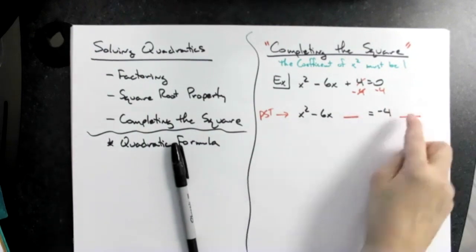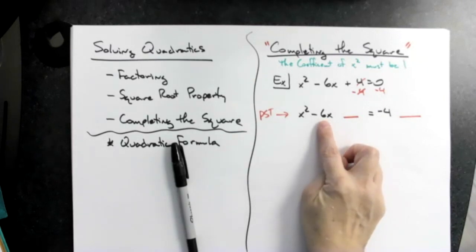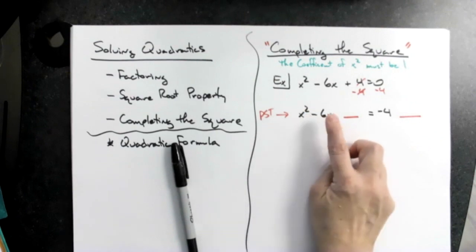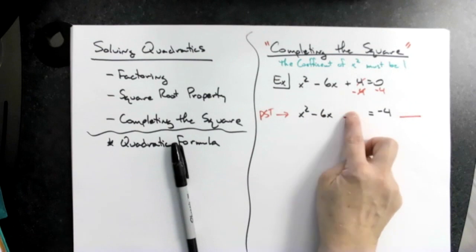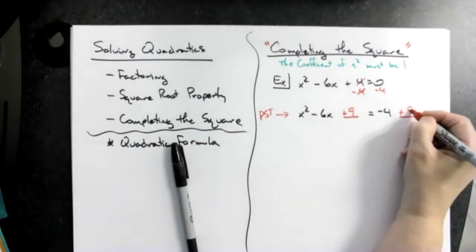Now if you remember what a perfect square trinomial is, all I have to do is undo the formula for the perfect square trinomial. So in other words I need to take half of this coefficient, don't worry about the sign, I have to take half of 6 which is 3, and then square it. 3 squared is 9, so half of 6 squared and that's going to be a plus 9, and I'm going to do a plus 9 here.